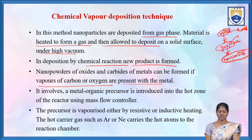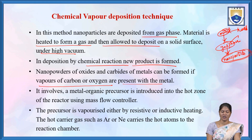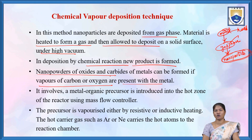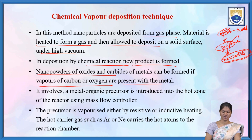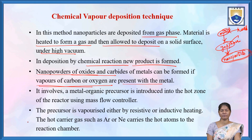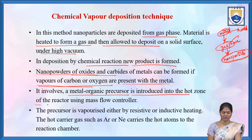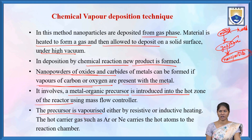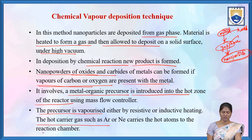If carbon or oxygen is present in the metal, then the nanopowders obtained after the chemical reaction consist of oxides and carbides of metals. It involves a metal organic precursor, which is introduced into the hot zone of the reactor using mass flow control. The precursor is vaporized either by resistive or inductive heating. The hot carrier gas such as argon or neon carries the hot atoms to the reaction chamber.